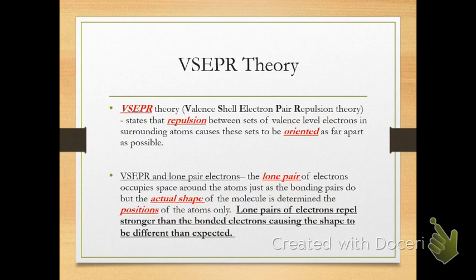It's the lone pairs on the central atom that matter, and they actually take up a little bit more space and repel more than the bonded atoms. But these can all be thought of as domains around that central atom. The domains can either be a bonded atom or they can be a lone pair, because it's taking up space around that atom.